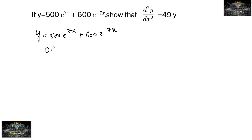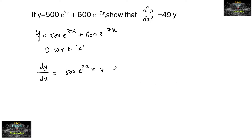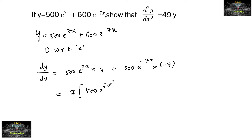Let's differentiate with respect to x. We have dy/dx is equal to 500 times e to the power of 7x, and by using the chain rule the differentiation of 7x gives 7, plus 600 times e to the power of minus 7x, and the differentiation of minus 7x gives minus 7. So dy/dx equals 7 times of 500e to the power of 7x minus 600e to the power of minus 7x.